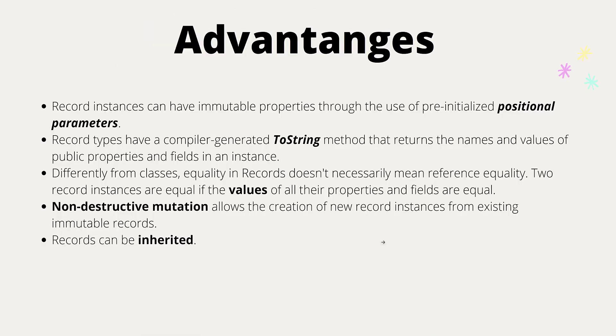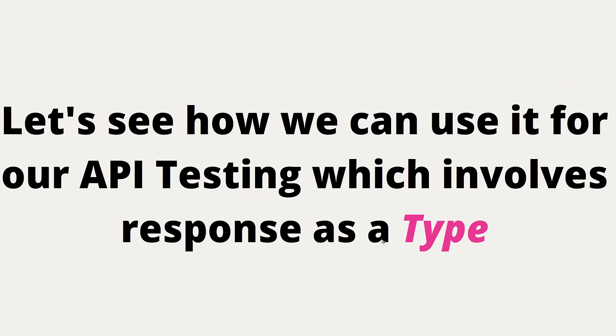Here are the advantages of record types in a nutshell: record instances can have immutable properties through pre-initialized positional parameters; record types have a compiler-generated ToString method that gives you a JSON-like structure; you can do value-based comparison; there is non-destructive mutation which allows creation of a new record instance from an existing immutable record easily; and records can be inherited. We are going to see these exact advantages with the help of a simple API testing example.